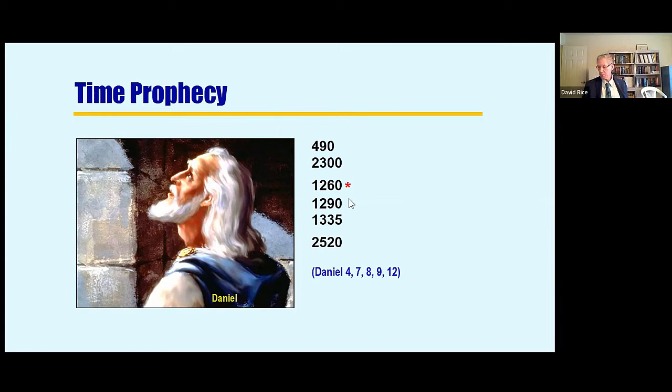Now I learned years ago from Brother Frank Shalhoub that Daniel was a picture of the true church during the gospel age. I think he's right. His analysis was very intriguing for me. These six time prophecies in Daniel all pertain to a fulfillment during the gospel age.